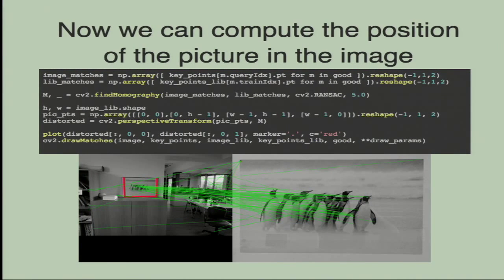Now we can compute the position of the picture in the image. First, we extract the matched key points for the image and for the library image. The OpenCV function findHomography extracts the homography transformation from two sets of points. Then we create an array with the four corners of the picture and transform those points with the homography matrix M using the OpenCV function perspectiveTransform. The computed homography is good because the red rectangle appears correctly over the picture in the image.